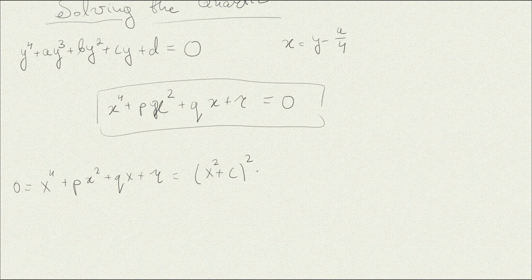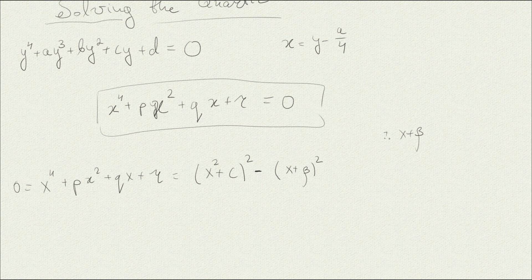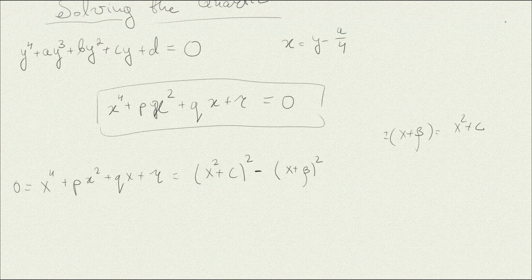But what if we could write this as a difference of two squares? Suppose we could write it as something squared minus something else squared — that's a more general expression with more parameters. If we had this equality, we could shift the second square to the other side, take the square root, and we'd have x plus beta equals plus or minus the square root of the other term. We'd then need to solve two quadratic equations, which we can do. That's the essence of the method.